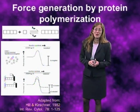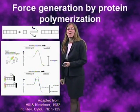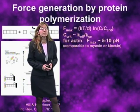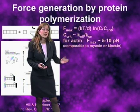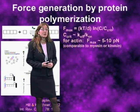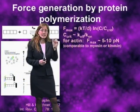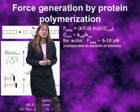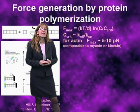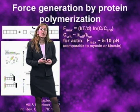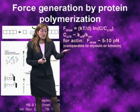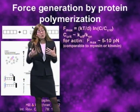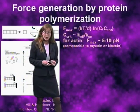Terrell Hill worked through the thermodynamics of this problem, and he came up with an equation showing the maximum amount of force that can be generated by protein polymerization as a function of several different variables. K is Boltzmann's constant, and T is the absolute temperature. The delta is the size of the subunit — that is, the distance that the load has to move forward in order for a new subunit to be added to the filament. And the only other thing that this process depends on is the ratio between the actual concentration of monomers present in solution, C, and the equilibrium constant for polymerization, which is also called the critical concentration, or C-crit.